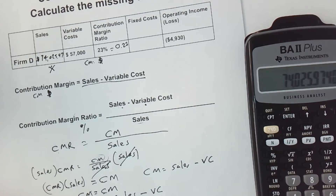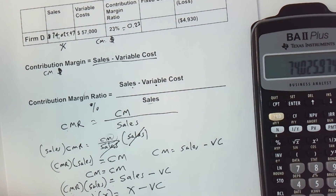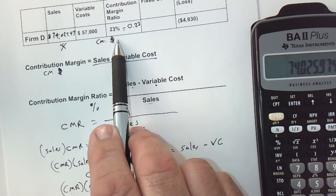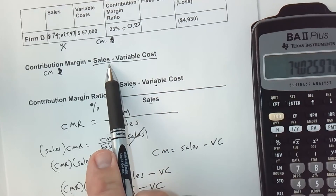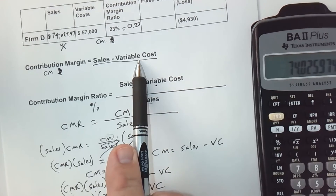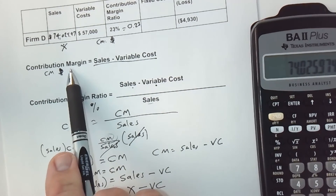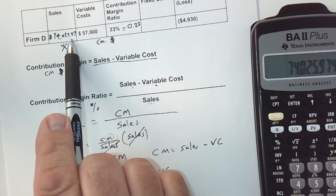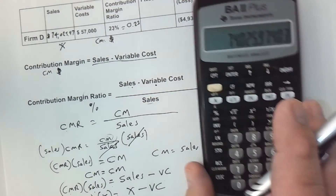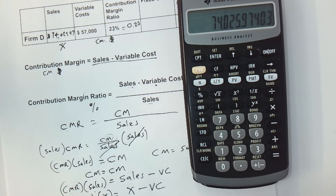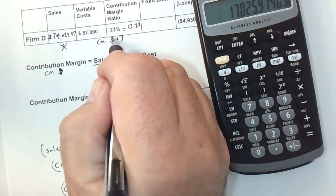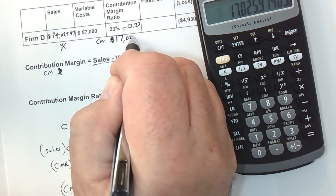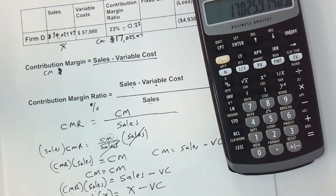Now I need to figure out the contribution margin in dollar terms. The easiest way is sales minus variable costs, which equals contribution margin — that's in our formula. I've got sales of $74,025.97 already in the calculator. I subtract the $57,000 in variable costs, and that gives me a contribution margin of $17,025.97.